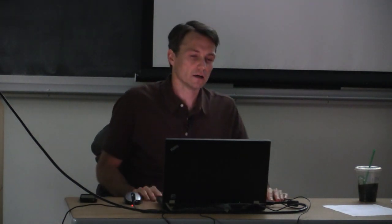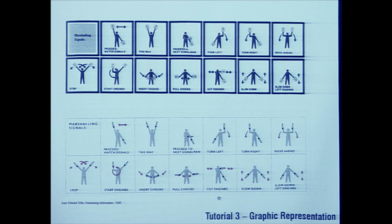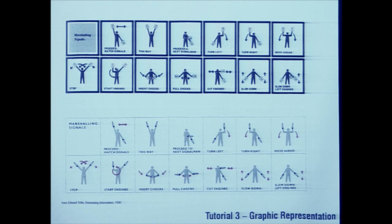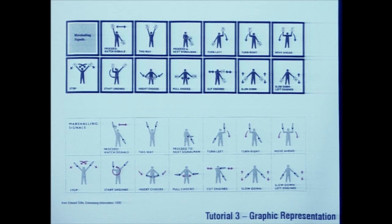This is a graphic from Edward Tufte's Envisioning Information — a great book you should check out. It shows a series of sequences for directing airplanes. Tufte demonstrates that even though the geometry of two sequences is exactly the same, one is clearer due to image hierarchy, colors, and the use of white space.